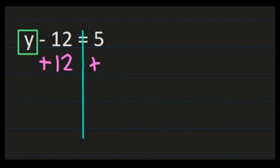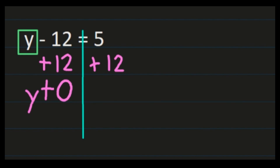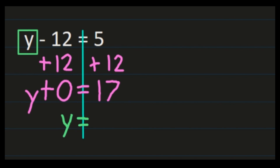If we add 12 to the left, we need to add 12 to the right because you need to keep both sides of your equation equal. I haven't done anything to y yet, so y remains the same. And then I have negative 12 plus 12, which is 0, equals 5 plus 12, because that's what we have on the right. So 5 plus 12 is 17. y plus 0 is just y, so now we can simplify this line: y plus 0 is y. My equal sign remains lined up and I didn't do anything to the 17 on the right, so y equals 17.